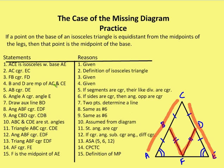B and D are midpoints of AC and CE respectively — that's also given. So AB is congruent to DE, because if congruent segments are divided in half, their halves are congruent. Now angle A is congruent to angle E because in an isosceles triangle, if AC and CE are congruent, then the angles opposite those sides are congruent.